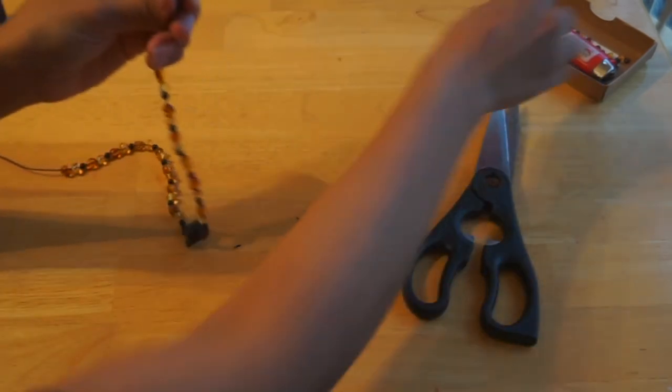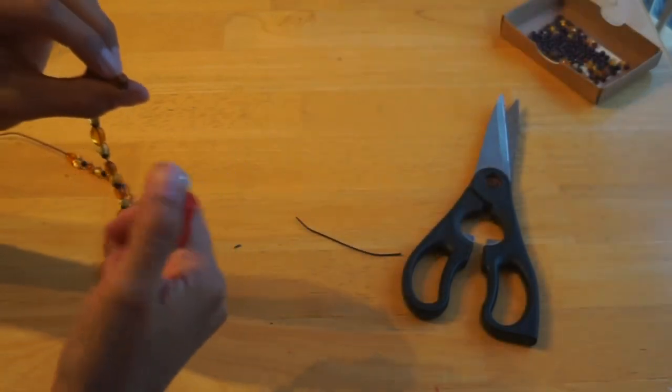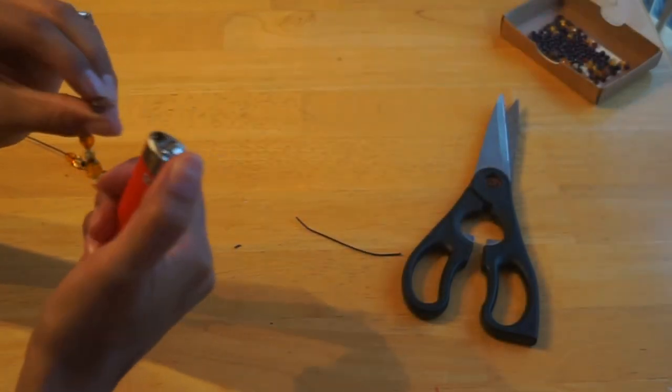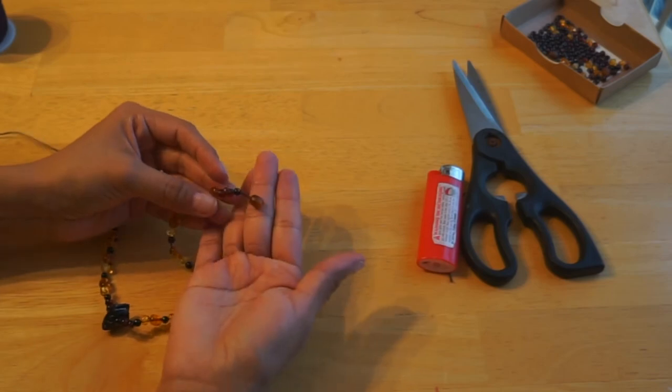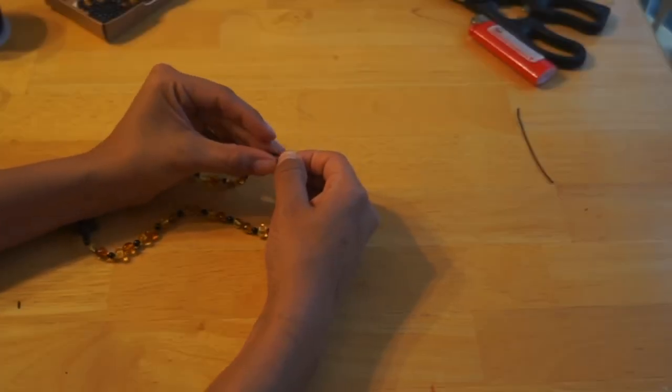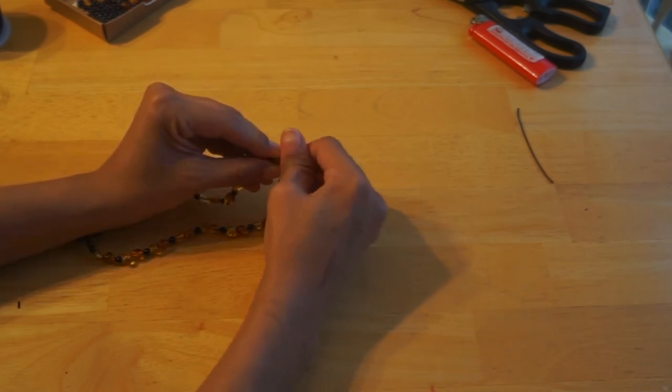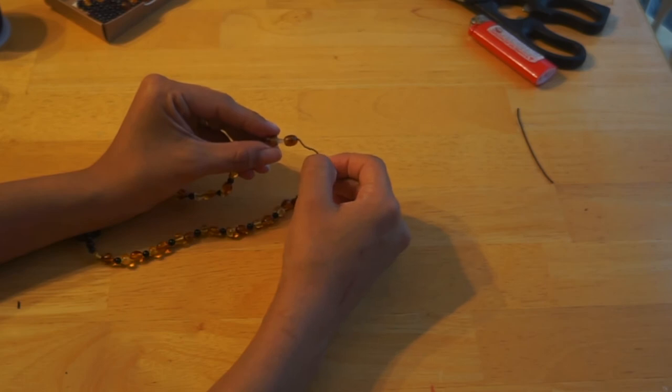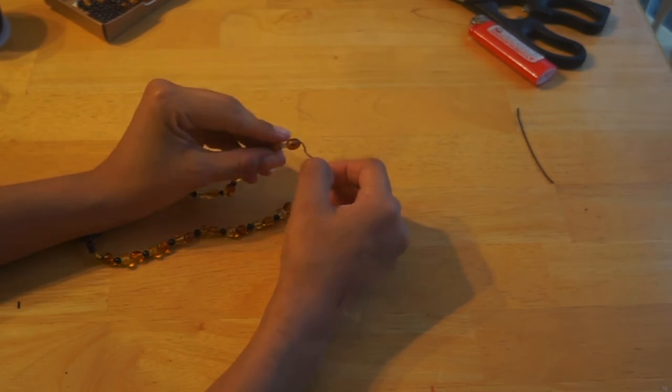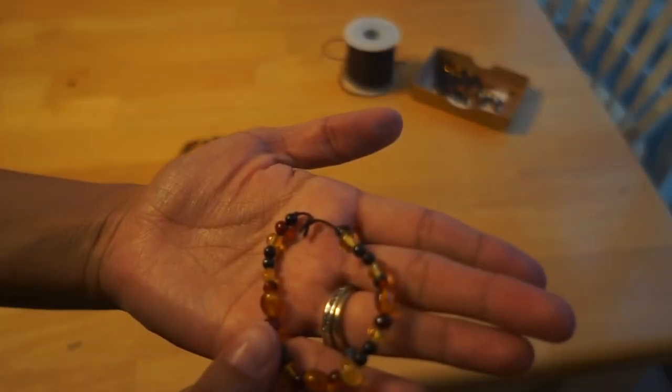You can find these really cute clasps on Etsy. I found them from the same seller that I bought my amber beads. I really like how these clasps turned out. It was really easy to attach them. You can always end up just tying whatever necklace or bracelet you make.